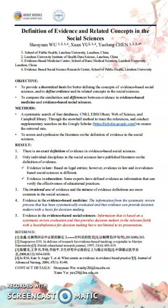Thirdly, the irrational use of evidence and the misuse of evidence definition are more common in the social science. The application of evidence-based thinking in the health field has a mature system. With reference to the definition of evidence in evidence-based medicine, evidence in the evidence-based social science can be defined as information that is based on a systematic review and that provides decision makers in the relevant fields with the basis or reference for decision making, but is not limited to its presentation.